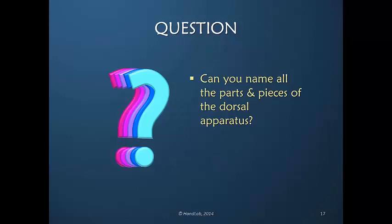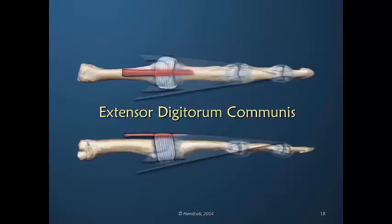I too would have said that many years ago, even though I thought I understood this anatomy. The extensor digitorum communis — we know it well as it approaches the metacarpal phalangeal joint. We call it the EDC, and there's really no clarification needed there.